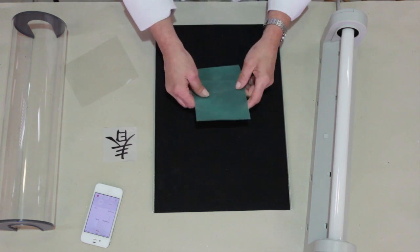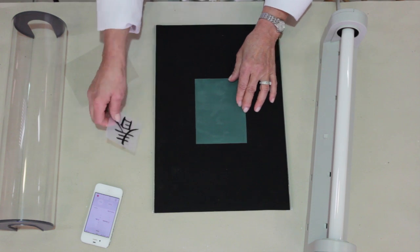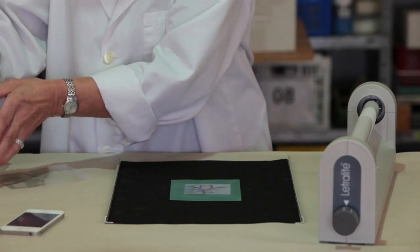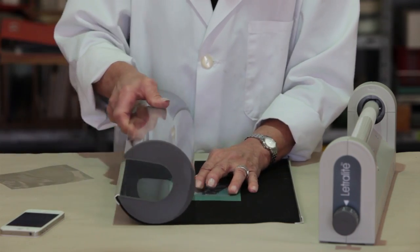First remove the transparent protective film from the screen. Place the screen with the matte side up on the sleeve and position the image in the middle. Wrap the sleeve around the drum and position the drum.